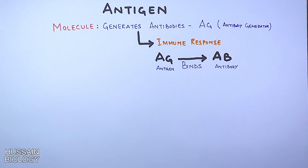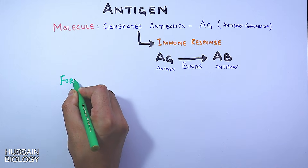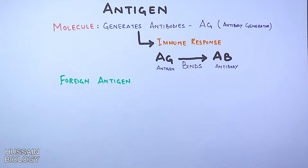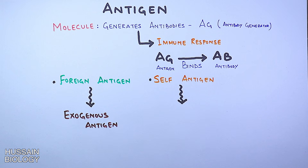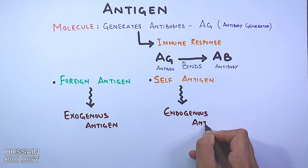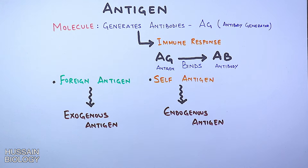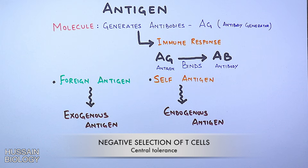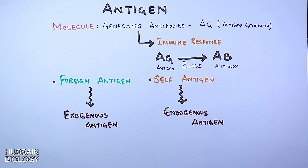In our body we have mostly two types of antigens: foreign antigens that are exogenous antigens, and self antigens which are endogenous antigens. It must be noted that not all endogenous antigens are self antigens. Self antigens originate from within the body, and it is through negative selection of T cells that our immune system does not target self antigens. But if endogenous antigens are generated from a virus or bacteria within our body, the immune system launches an attack.